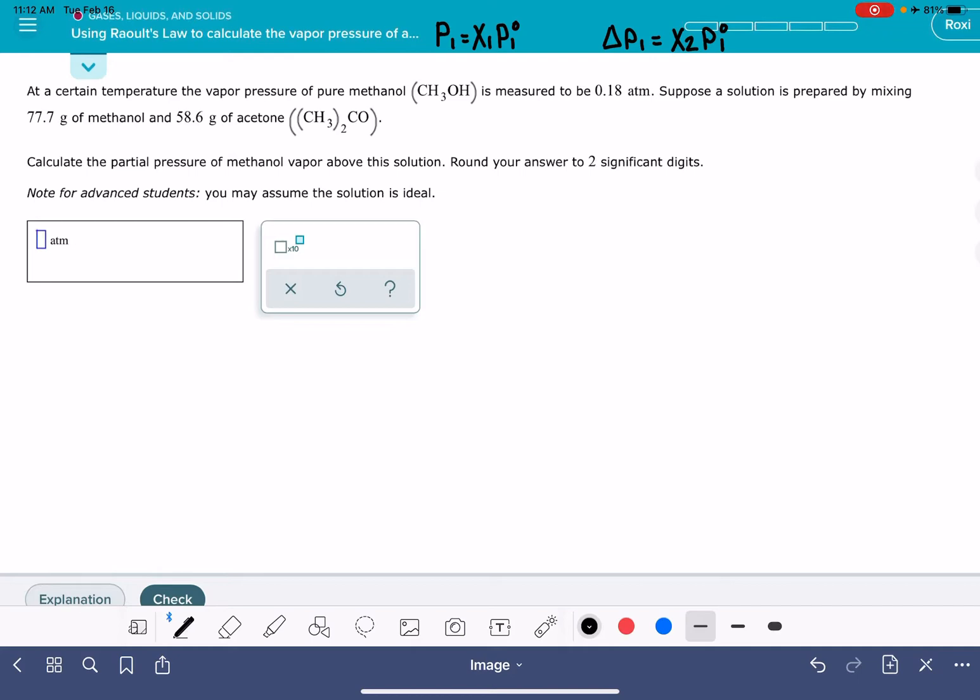So we have to first of all figure out which one of these equations we want to use because we have enough information to use whichever one we want. The problem is asking us to calculate the partial pressure of methanol. We want to calculate the actual partial pressure of methanol. We're not looking for a change to the pressure. We just want the actual pressure. So that means this is the equation right here that we want to use. I'm just going to put an x over this one so we don't get confused about it.